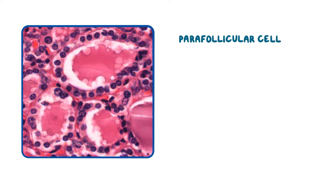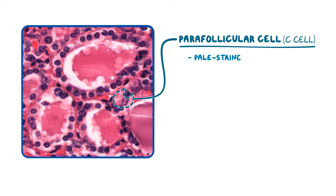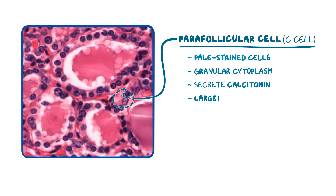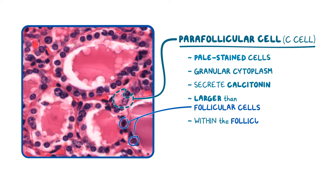Still at 40x magnification, this image has an example of a parafollicular cell, also called a C-cell, near the center. These pale-stained cells have a granular cytoplasm and are responsible for secreting calcitonin. They're larger than follicular cells, but there are fewer of them. They can usually be found in the periphery within the follicular lining or in the interstitial space between follicles. Because they don't absorb a lot of the H&E stain, they can be difficult to identify.